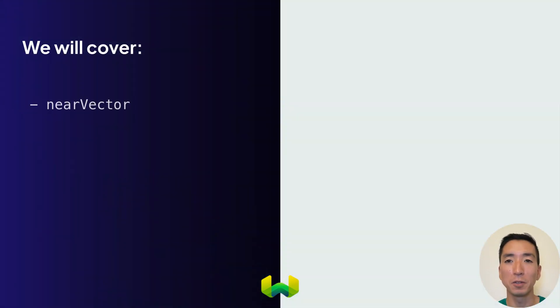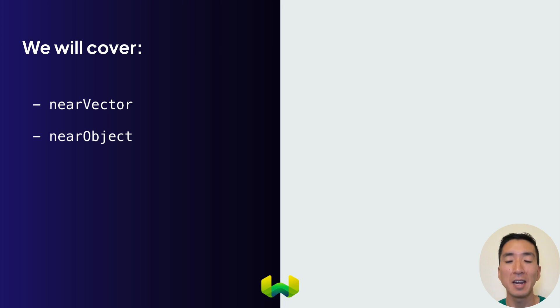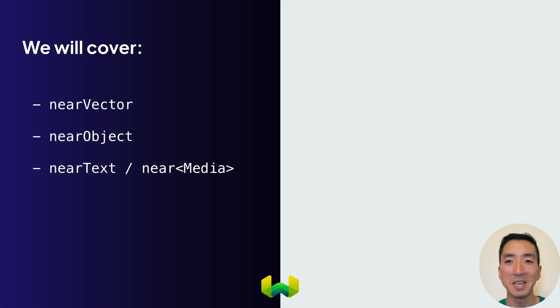Weaviate offers options like near-vector, near-object, and near-text methods, or more generally, near-media methods. We'll go through each of these one by one to give you a clear understanding of their usage.